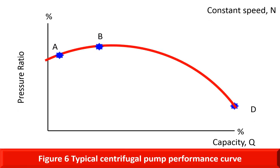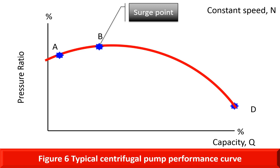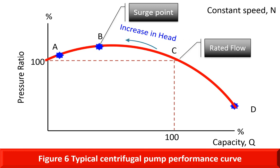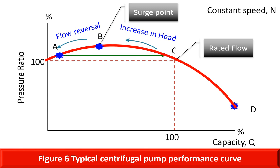Let me now explain the surging phenomena with the compressor characteristic curve. Point C in the figure is the rated operating point of the compressor. As the flow is reduced, the pressure ratio increases following the curve and reaches point B. At this point, the compressor is unable to maintain a steady flow of gas into the system. Further decrease in flow causes the pressure ratio to drop further. At point A, the pressure in the delivery pipe is higher than the pressure developed by the compressor and momentarily flow reversal takes place. The gas from the discharge piping flows back into the compressor causing the system back pressure to drop. Hence, the compressor recovers and the pressure ratio rises slightly and the forward flow to the discharge piping resumes momentarily. This is called flow recovery.